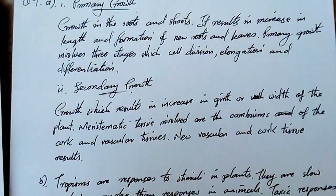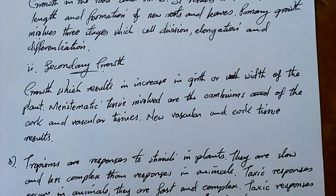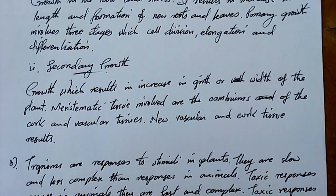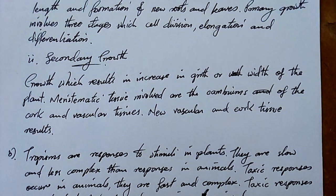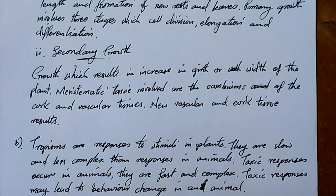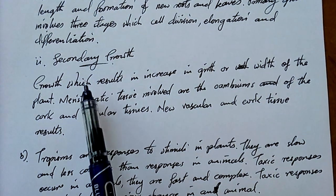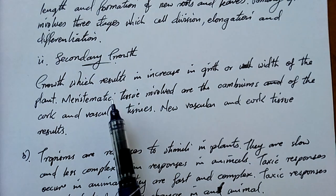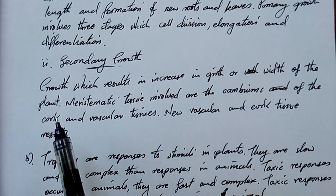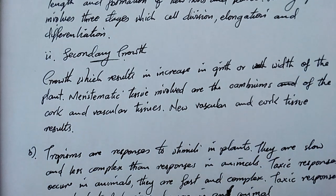Secondary growth results in increase in girth — that is, thickness or width of the plant. The meristematic tissues involved are the cambiums of the cork and vascular tissue. The development of these cambiums results in the formation of more vascular bundles.